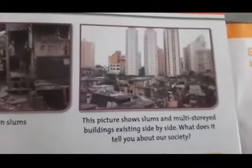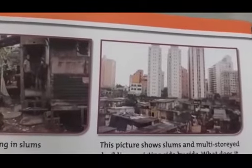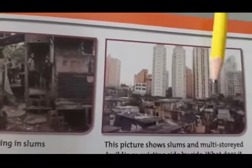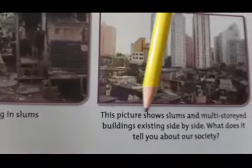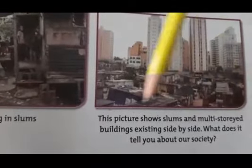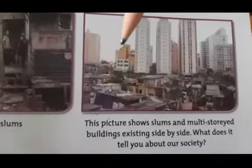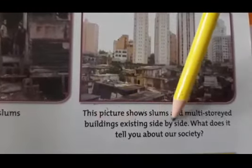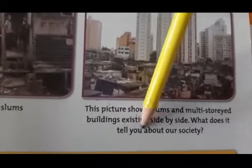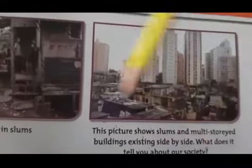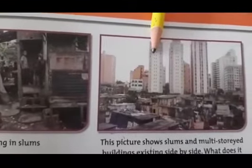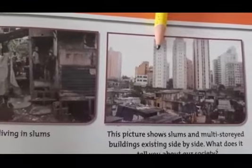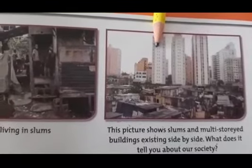Now, see children — this is an apartment. In cities you can see this type of place. It is clean and many people live there. They have many rooms. Now see here, it is written: 'This picture shows a slum and multi-story buildings existing side by side. What does it tell you about our society?' You can see the slum area here, and you can see apartments here. That is the difference I showed you on the board — they have rooms, the others have no rooms and no water facility.